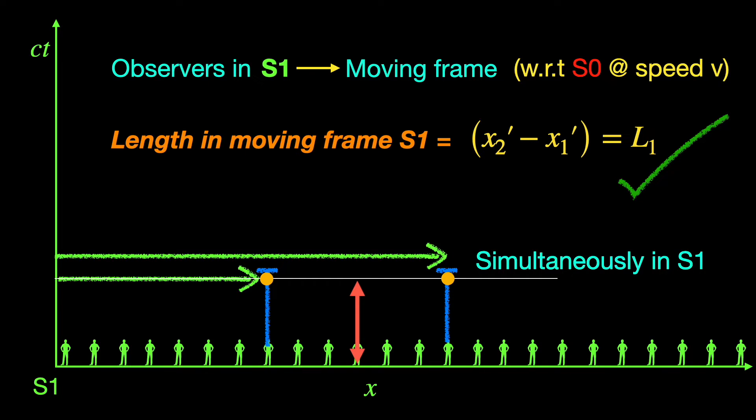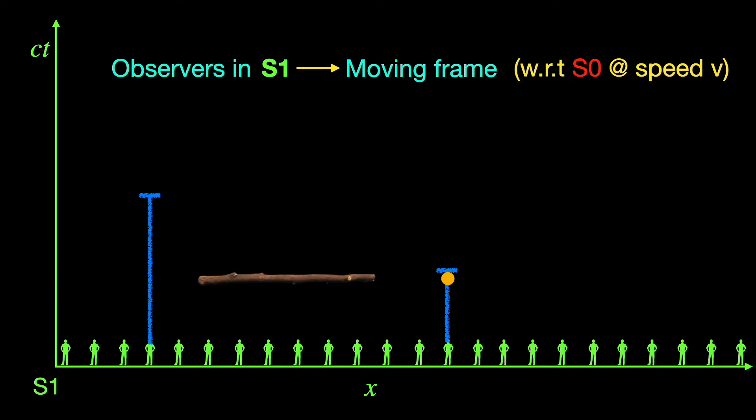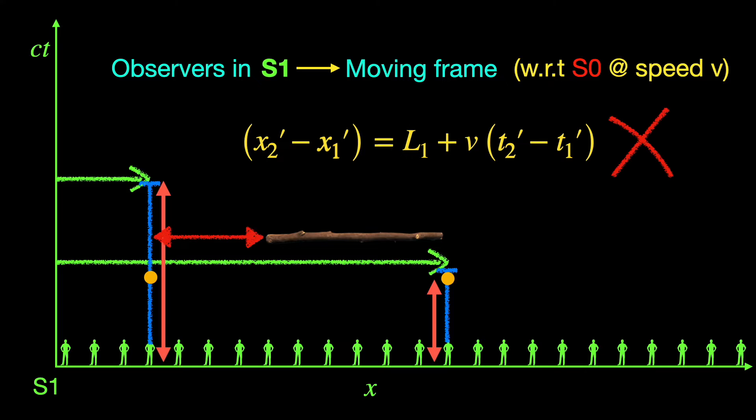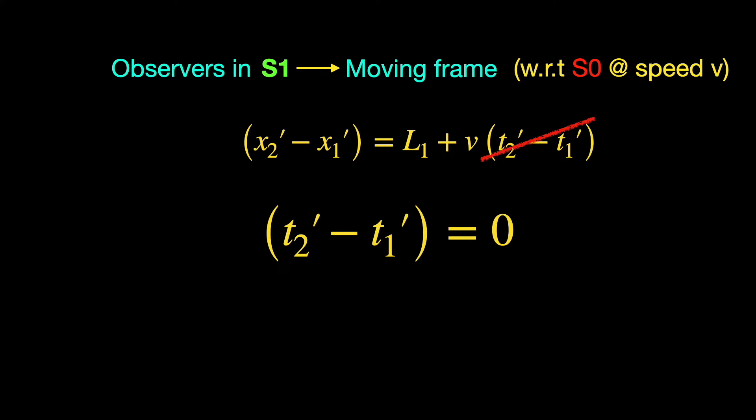Imagine if there is a time lapse instead, say t2' minus t1' between the measurements of the two ends, the stick would have moved a distance v times (t2' minus t1') resulting in an obviously erroneous value of the length. So for the moving frame length measurement, one needs to impose the additional condition t2' minus t1' equals 0.